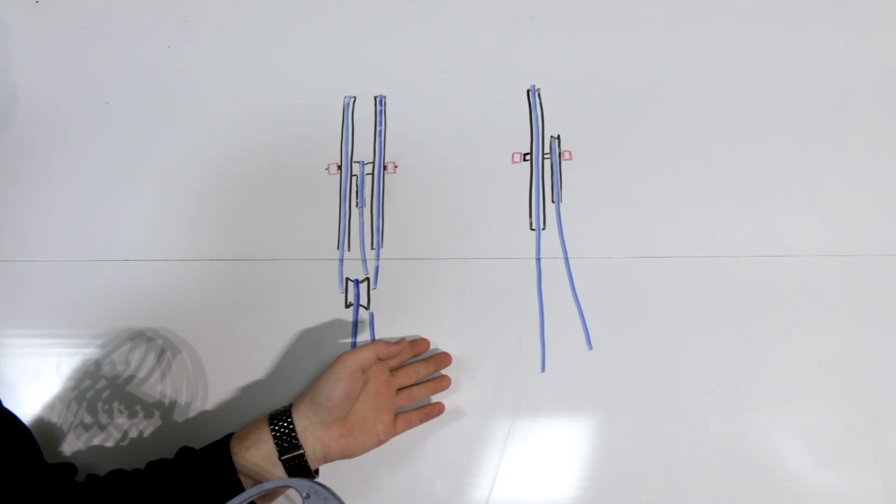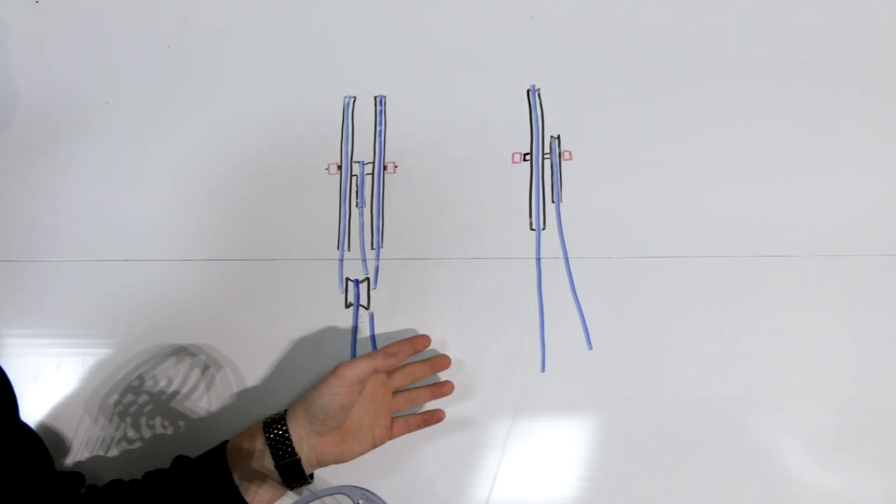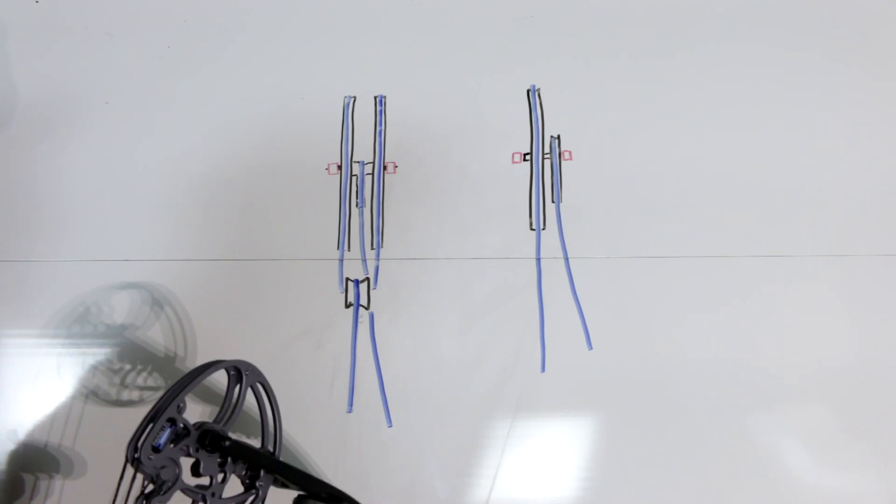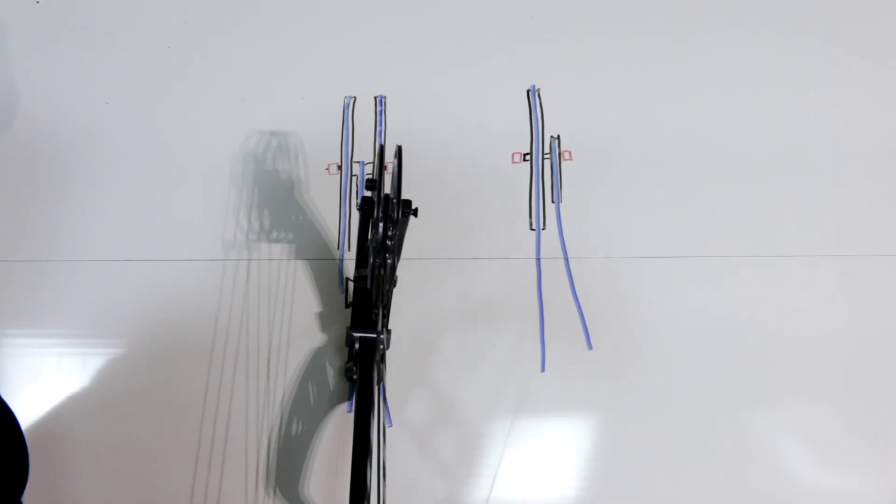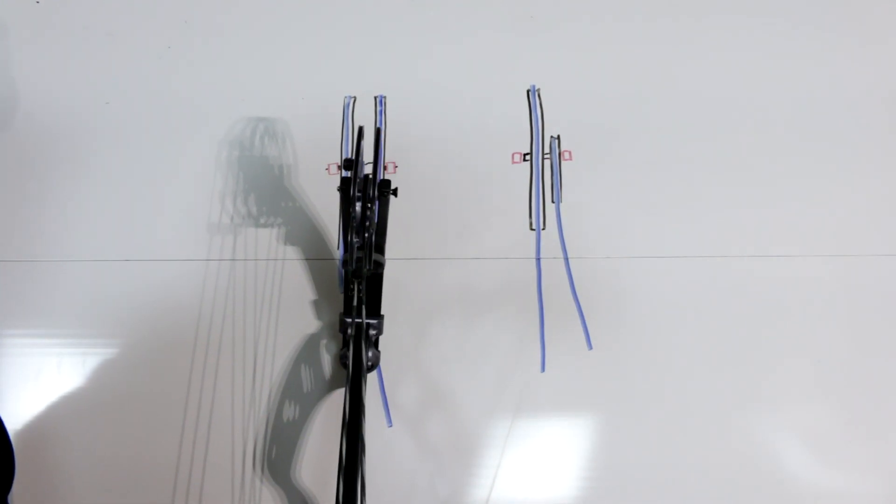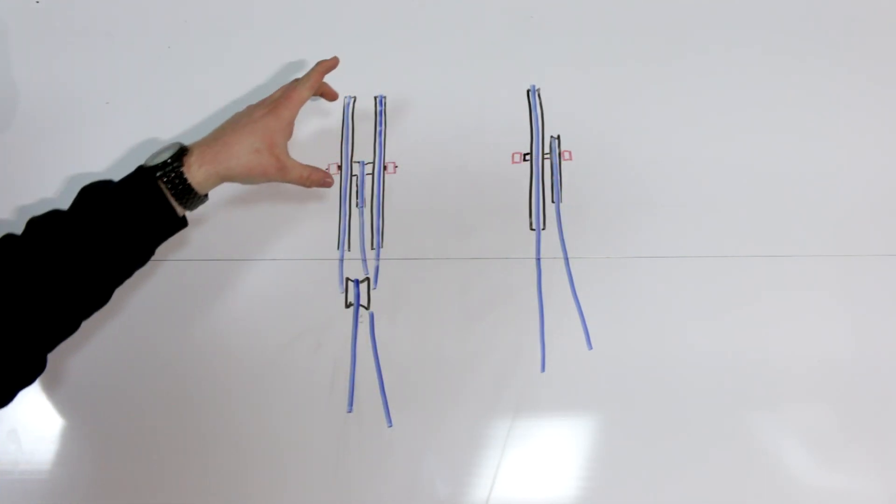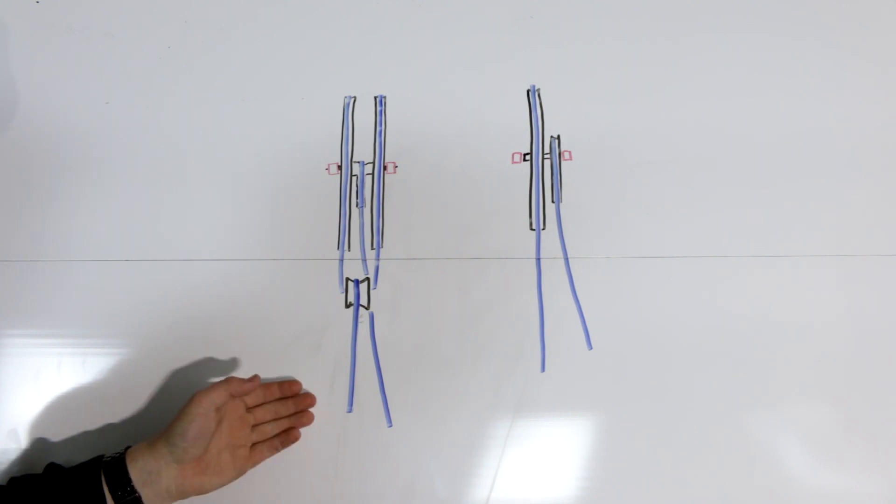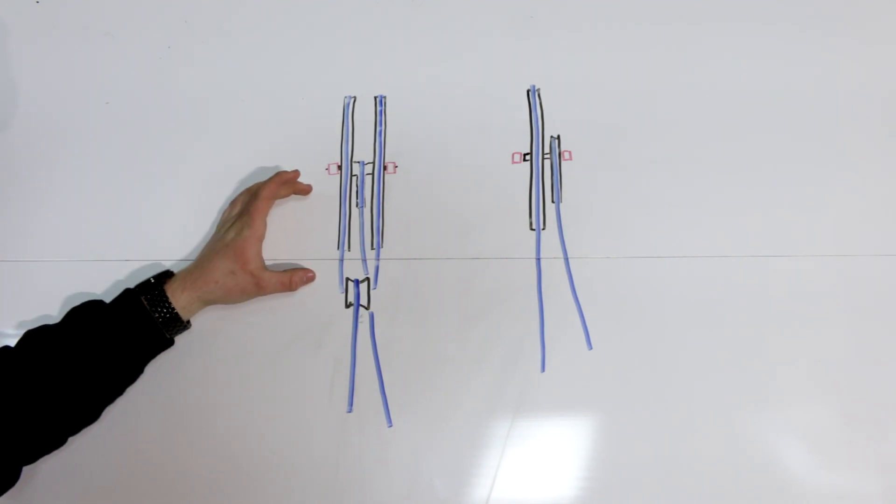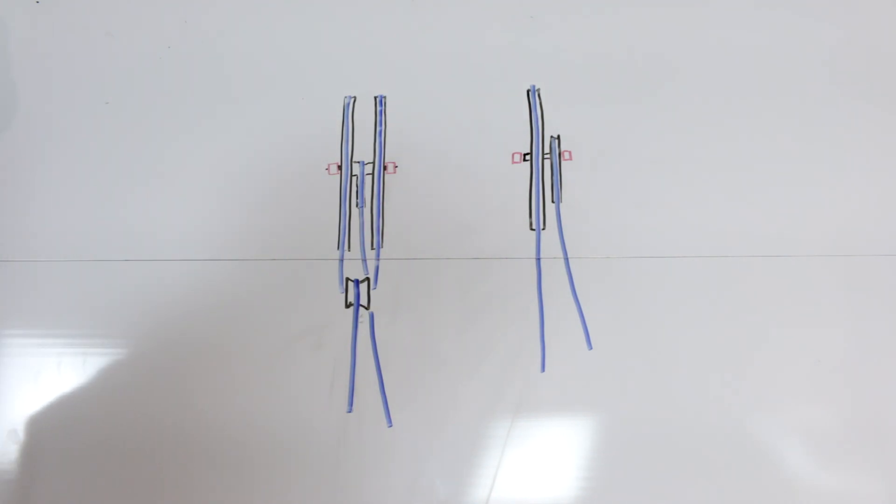So what I have drawn here are two diagrams of two different styles of binary cam systems, as if you were to look at the bow from the back, just like this. These red blocks are your limb tips, the blue indicates bow strings and cables, and the black lines indicate cam and cam accessories.